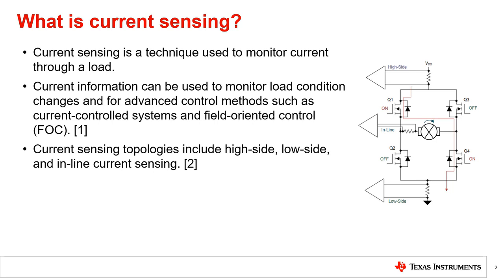The voltage drop across the resistor can be amplified by a current sense amplifier so that it can be measured with a voltmeter or read by an ADC channel of the microcontroller. The biggest difference between these topologies is that the in-line current sensing method is capable of measuring the motor current during the decay phase of the H-bridge.